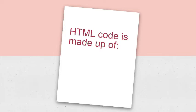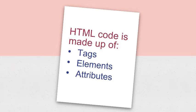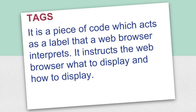HTML code is made up of tags, elements and attributes. Tags: a tag is a piece of code which acts as a label that a web browser interprets. It instructs the web browser what to display and how to display. Tags contain elements which define how the information on a web page is formatted or displayed. They contain text enclosed in angle brackets. Each tag has its own attributes and default values, and each tag in HTML has specific rules known as syntax. For example, the font tag.